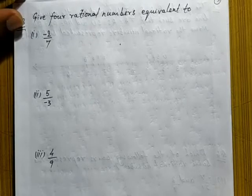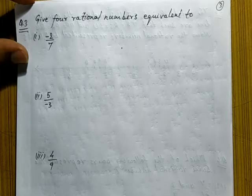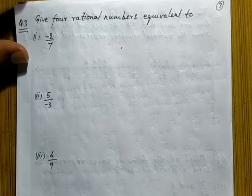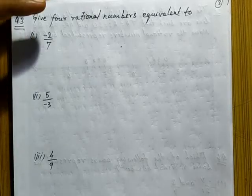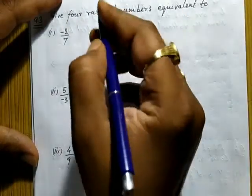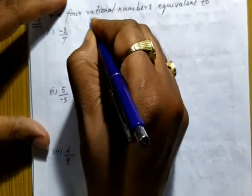Question number three: find four rational numbers equivalent to minus two upon seven, five upon minus three, and four upon nine. By multiplying the numerator and denominator of a rational number by the same non-zero integer, we obtain another rational number equivalent to the given rational number.